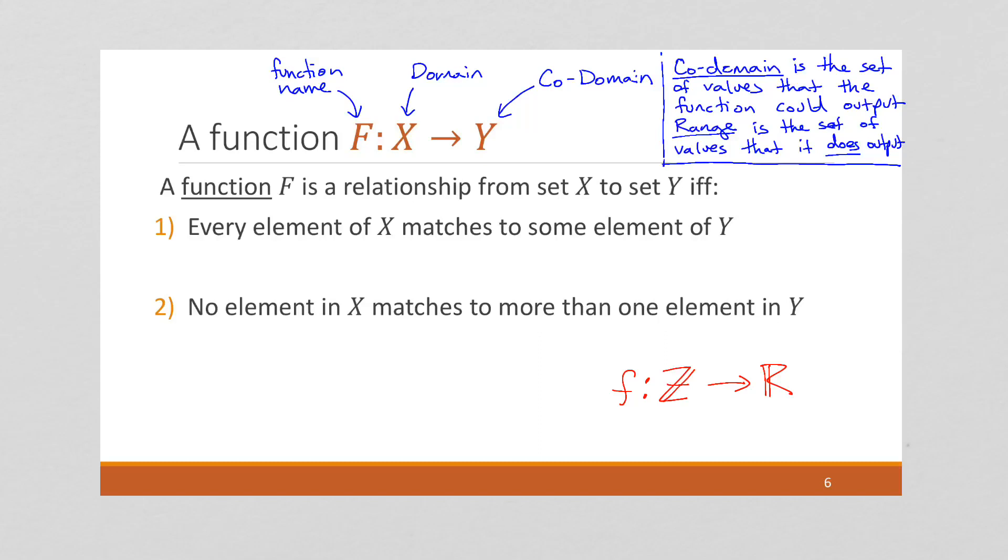But rather than specifying that the range is, for example, all real numbers greater than 1.3 and less than 2.7, which is what you typically do when you do a range, the codomain is typically more of a general set, the overall arching, what does this function do? Oh, it takes some integers and it gives out a real number.